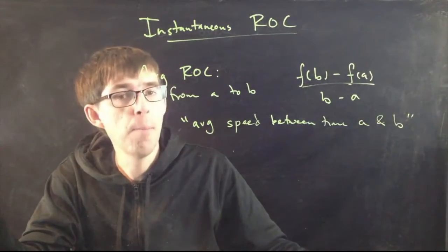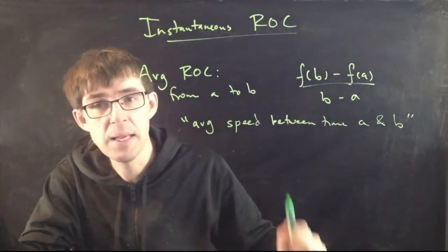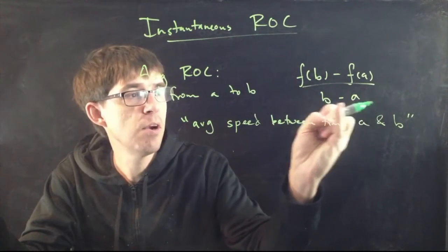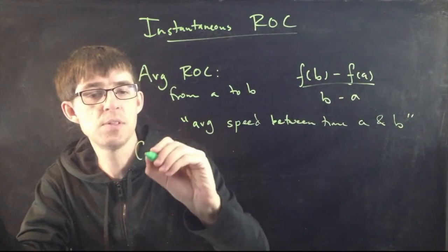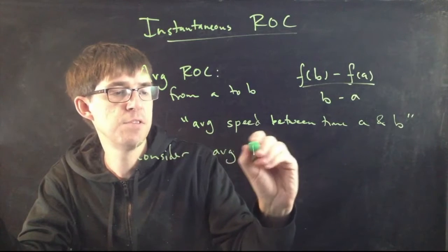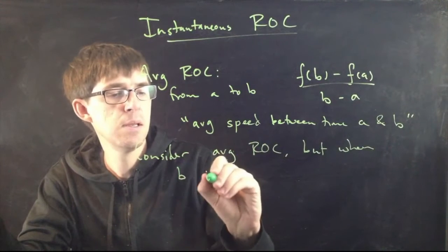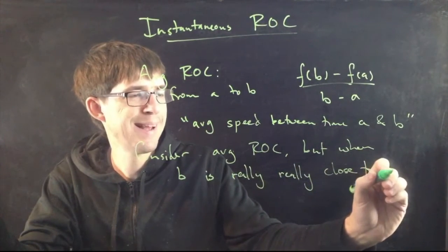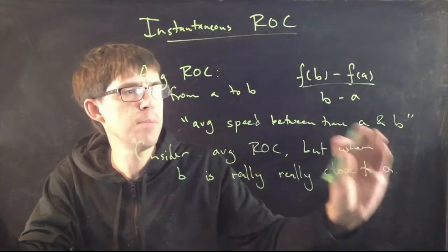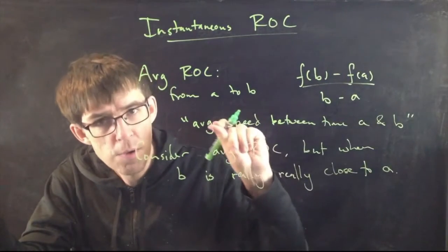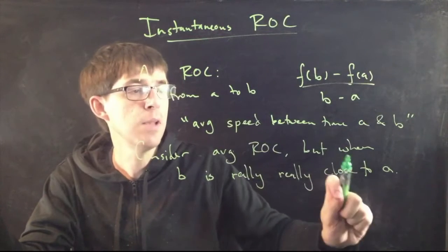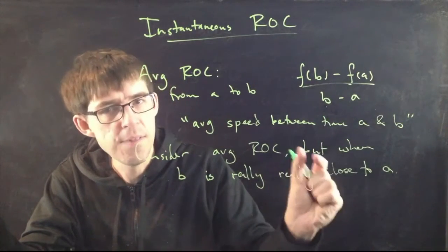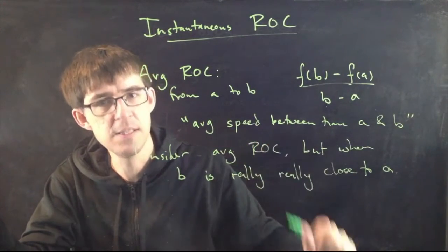We should think of this as something like the average speed between time a and b. Instead of this, we would like to know what is the speed just right at time a in that moment? The idea here is to look at this average speed, but you consider it only when the b is like super close to the a. So we consider the average rate of change, but when b is really, really close to a. This will make it so that the duration, instead of being a long duration, is like an instantaneously small duration.